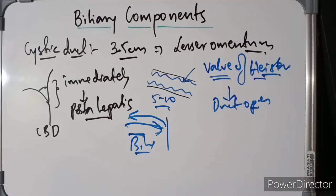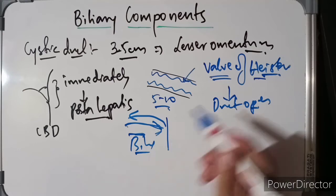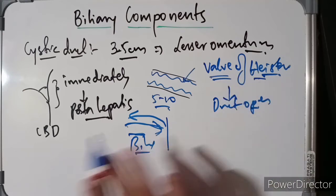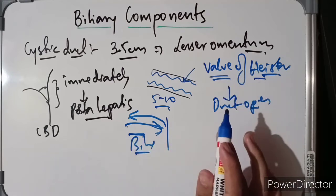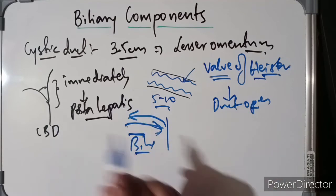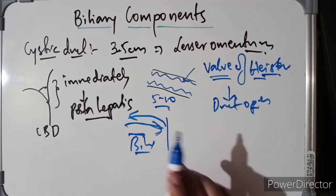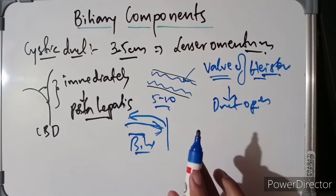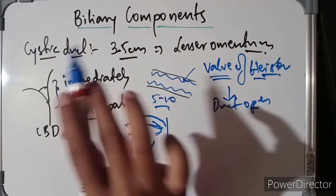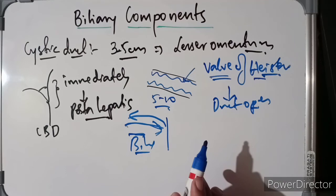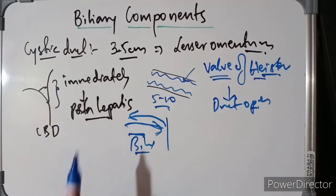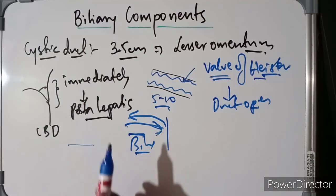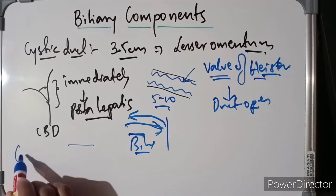When the common bile duct is closed at its inferior end, bile secreted by the liver fills the duct and passes through the cystic duct into the gallbladder. When the common bile duct is open, bile flows into it from the common hepatic and cystic ducts. This is the anatomy of the cystic duct.